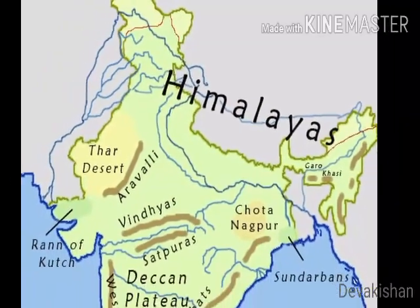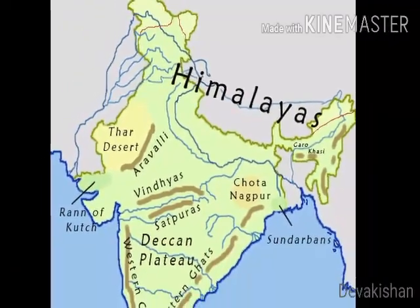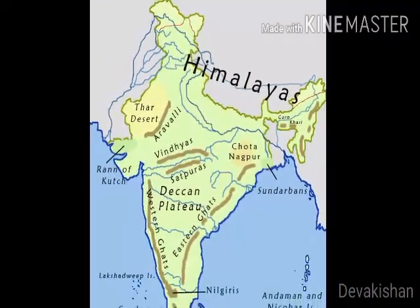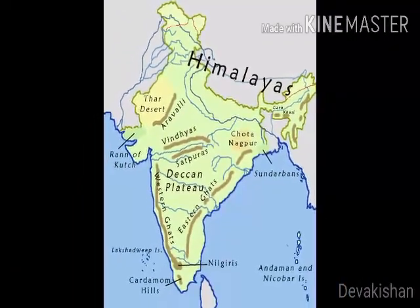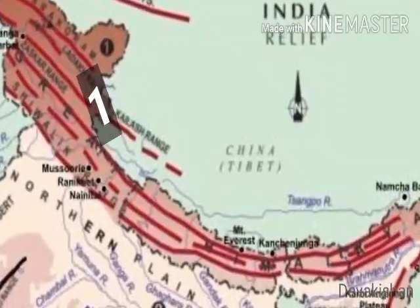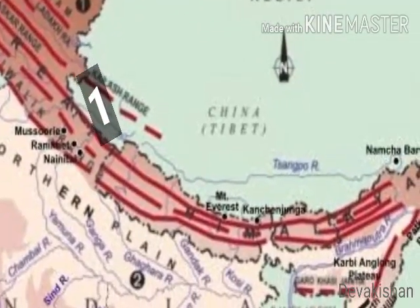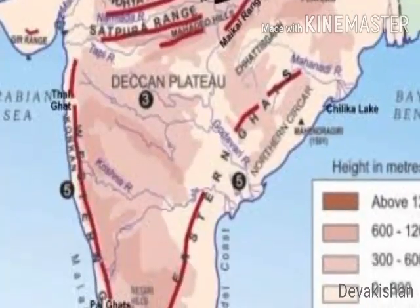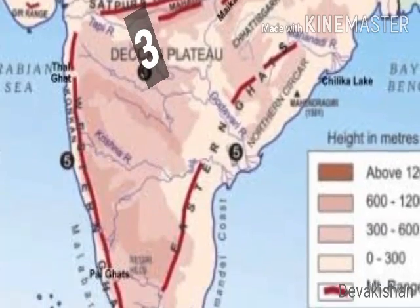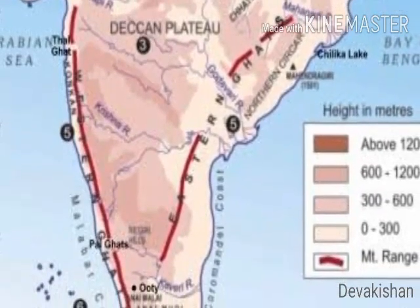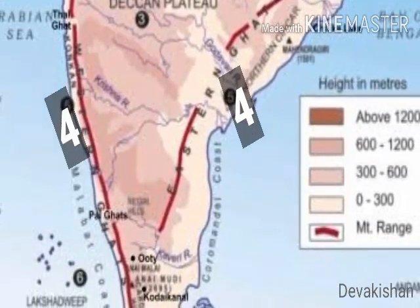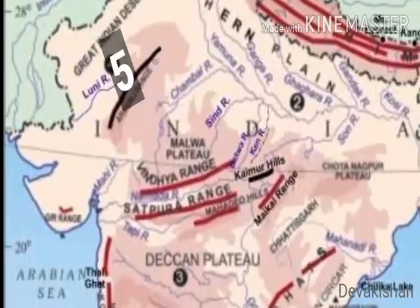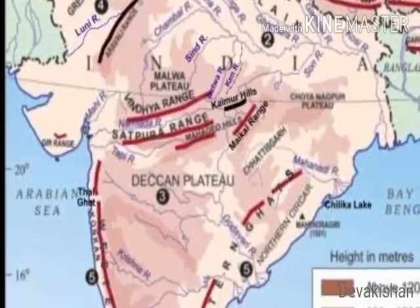The six major relief divisions of India are: 1. The Himalayas, 2. The Indo-Gangetic Plain, 3. The Peninsular Plateau, 4. The Coastal Plains, 5. The Desert, and 6. The Islands.